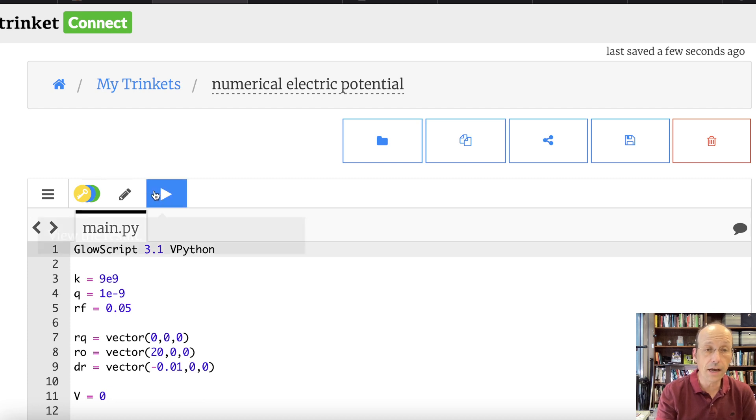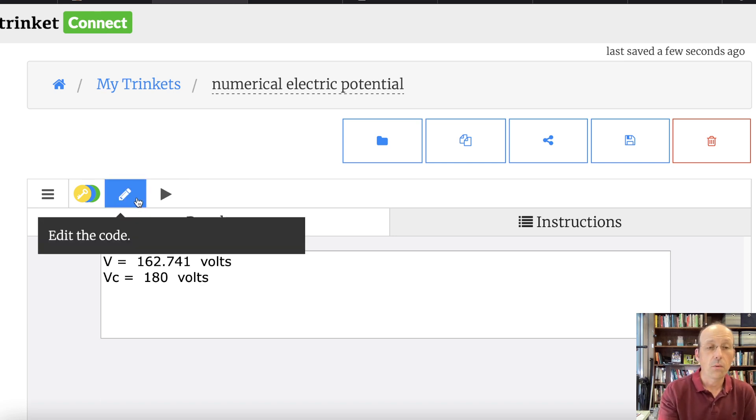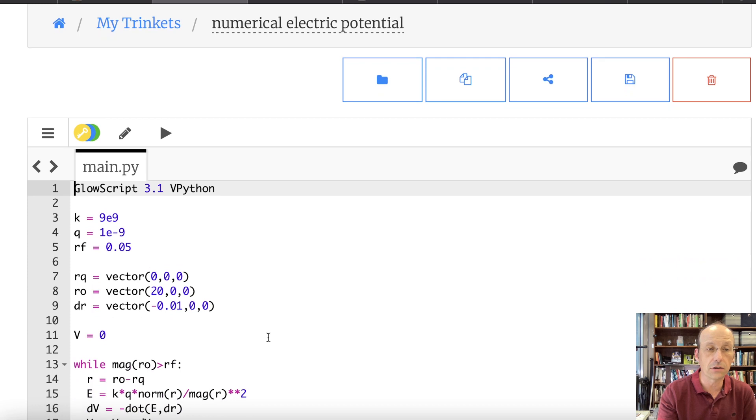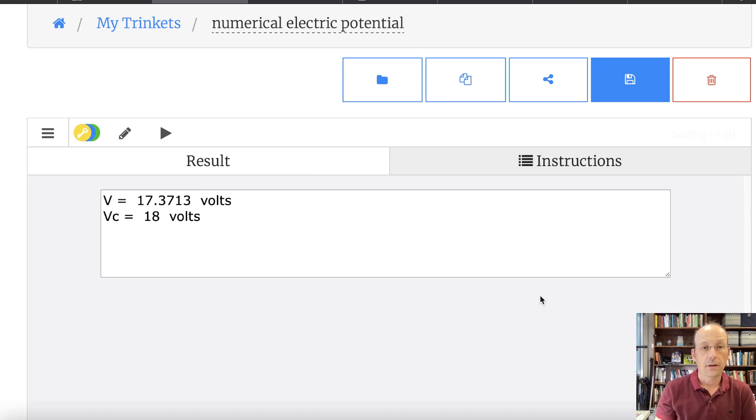Okay, so now as I run that, you'll notice that my answer is wrong. And it's wrong because if you think about this, as I get closer and closer, that assumption that the electric field's constant is no longer true. If I go one centimeter as I get really close, that's not a good assumption. So we can fix this. We can fix this number one by just not going as close. If I put rf equals 0.5, that's really good, right? 17.3 volts versus 18 volts.